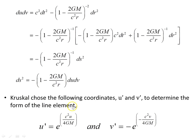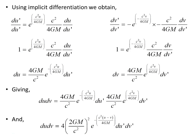Kruskal chose the values u′ = e^(u/4GM/c²) and v′ = e^(v/4GM/c²) in his search for the form of the line element. Using implicit differentiation, du′ = (1/4GM) e^(u/4GM) du, so du = (4GM) e^(−u/4GM) du′, and similarly dv = (4GM) e^(−v/4GM) dv′. This gives the product du·dv in terms of the primed differentials.